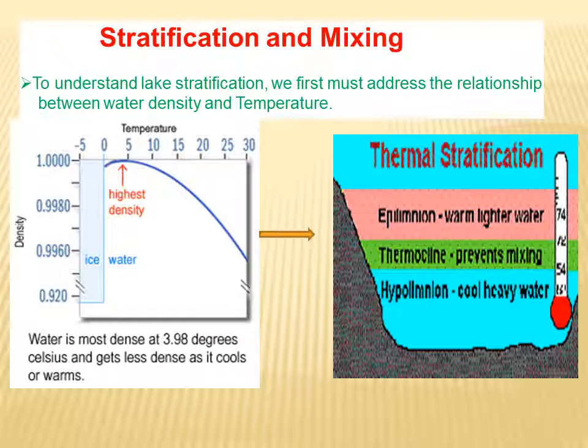The characteristics of epilimnion: there is adequate sunlight, so there is high photosynthesis and high availability of oxygen in the topmost layer. The water is warm as well as lighter. In the middle region, the temperature is 9 degree centigrade and there is no mixing of water because the density of water is decreased.